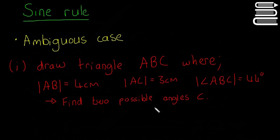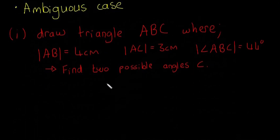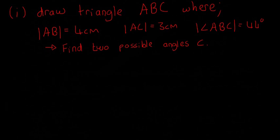And it's asking us to find the two possible angles of C. So you'd probably be thinking, how can something possibly have two possible angles? You'll see exactly what it means now. So this is going to be A, B, and this is going to be 44 degrees, and this last point is going to be C.